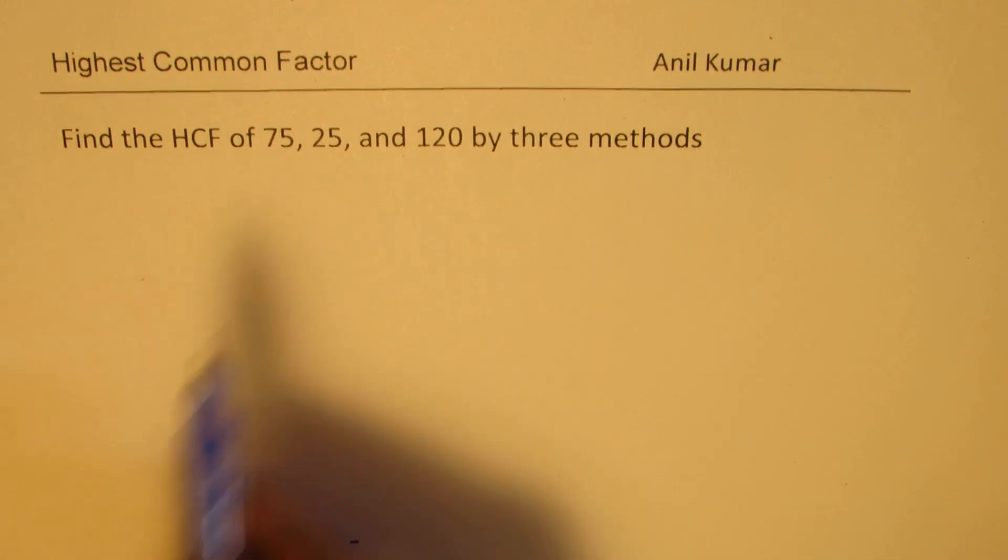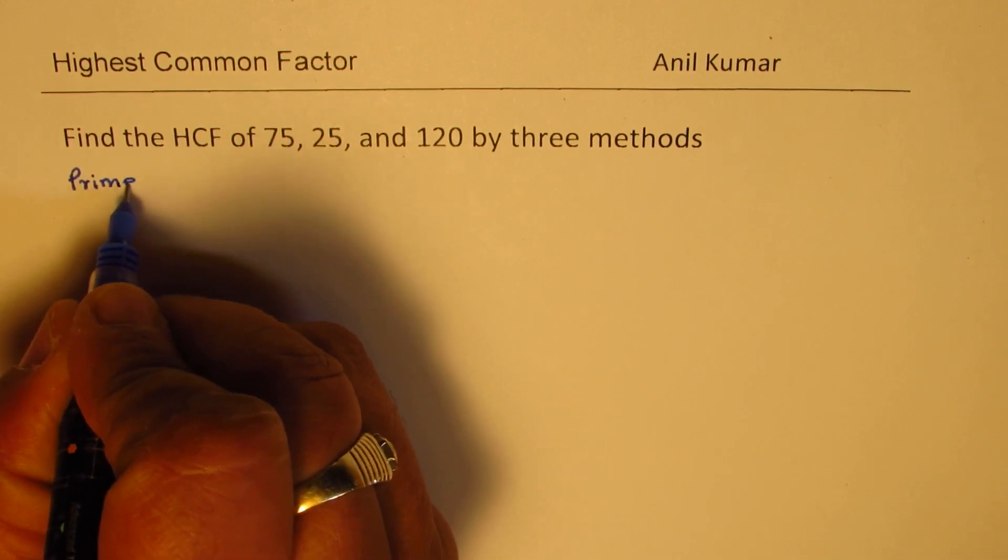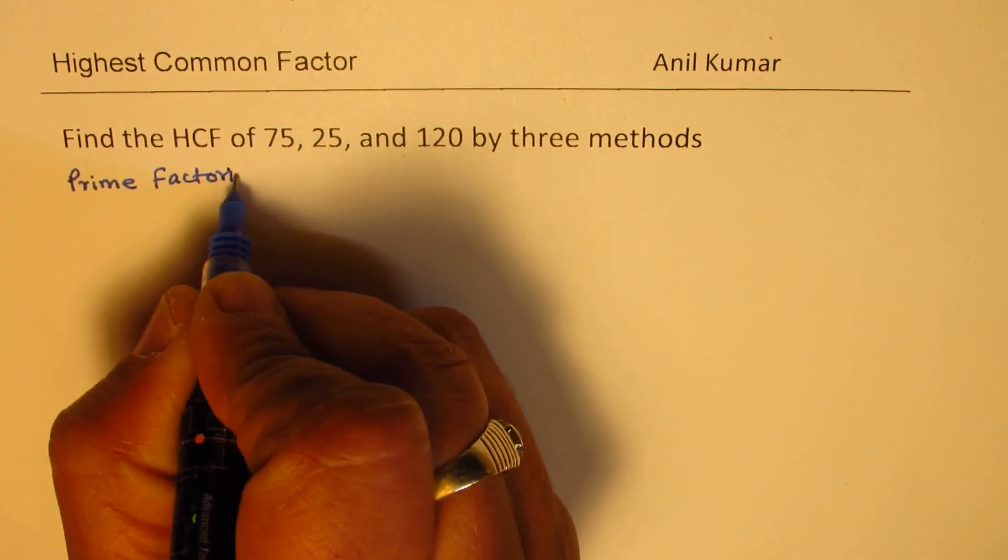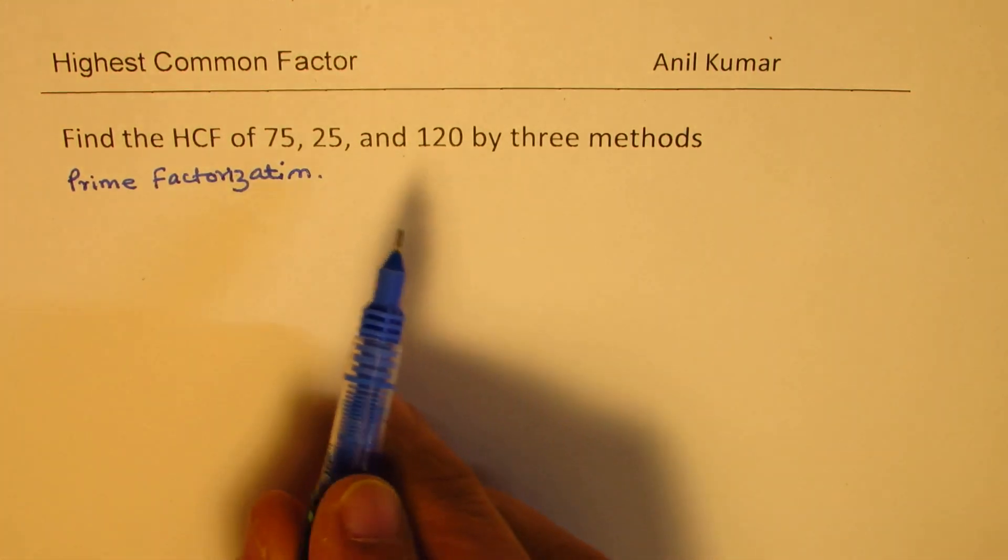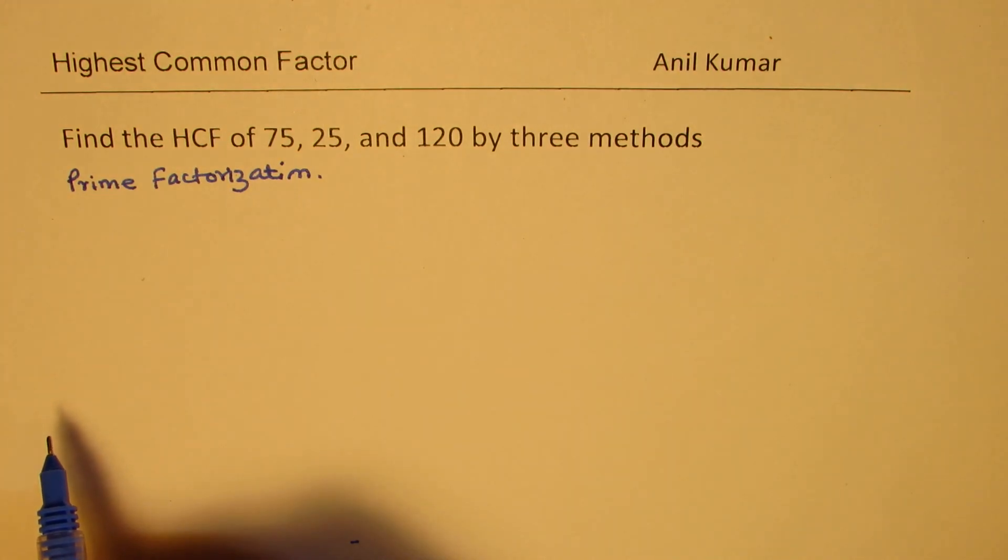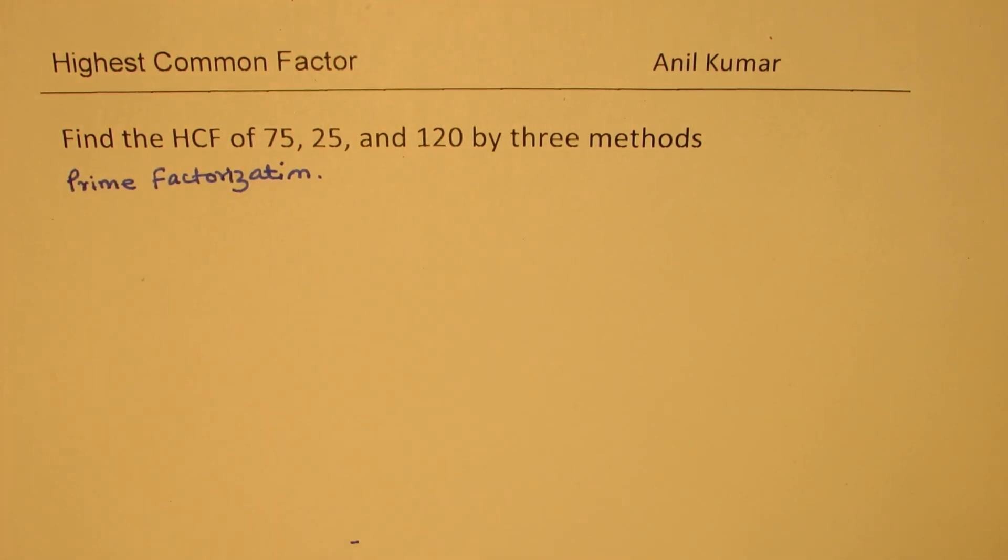The first method which I am going to do is with prime factorization. We will prime factorize all these numbers and then we will see what are the common factors and from there we can get the highest common factor.